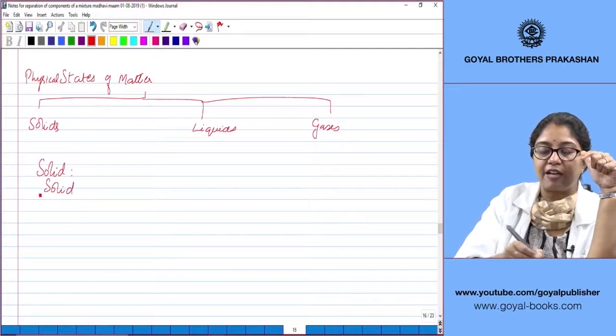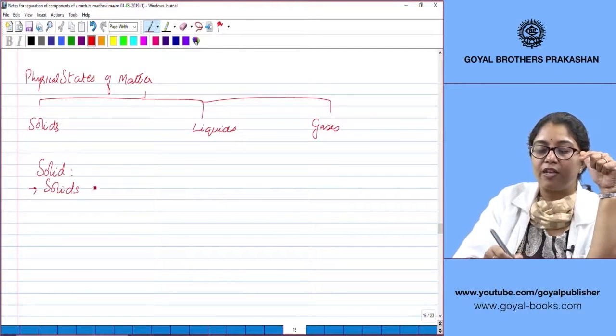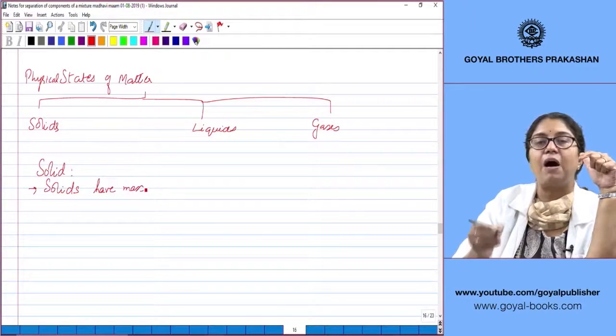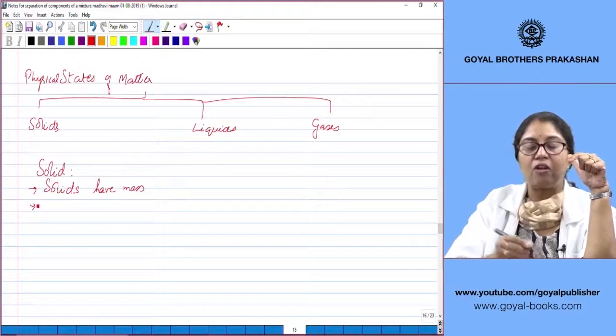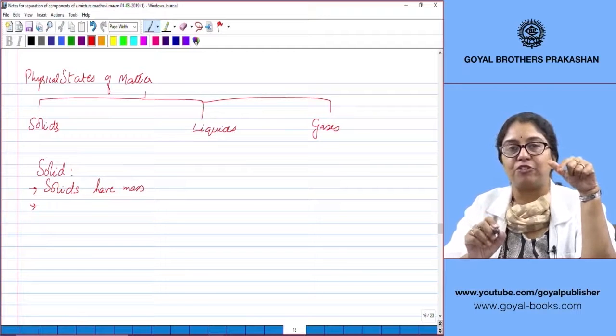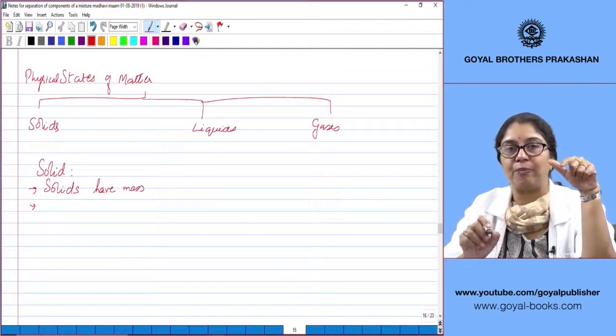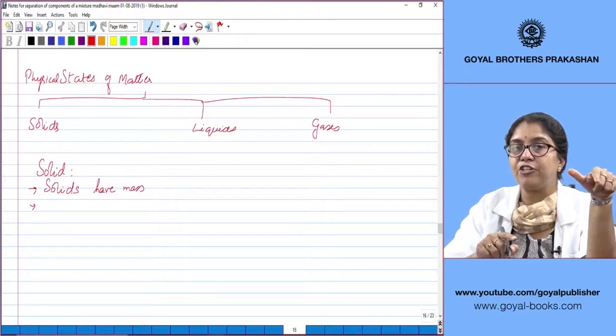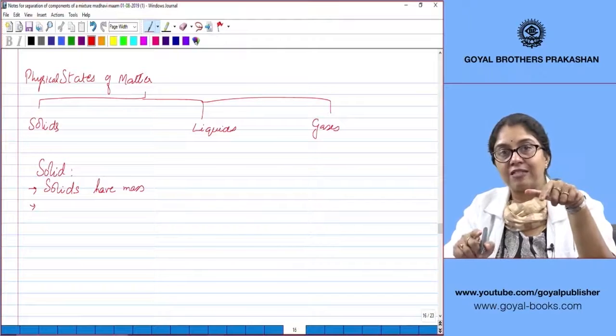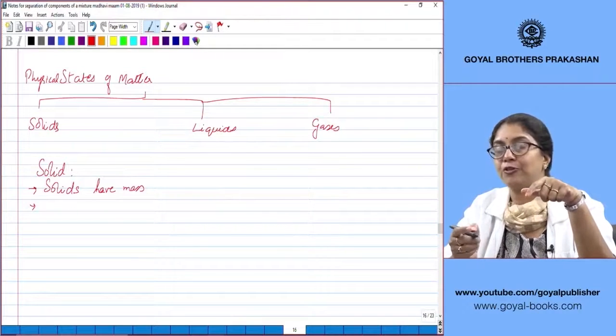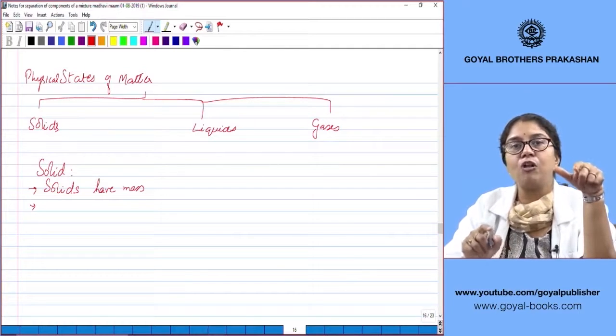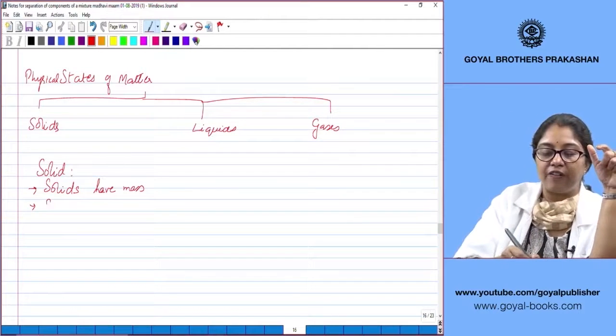The first characteristic of solids is they have mass. Now, solids have a definite shape. Don't you think the book has a definite shape? The chair you're sitting on has a definite shape. The pencil has a shape—of course when you sharpen it, it decreases, but still. The pen has a shape. So all solids have a definite shape.